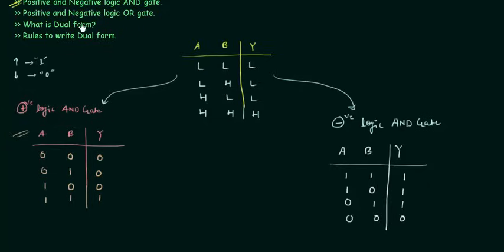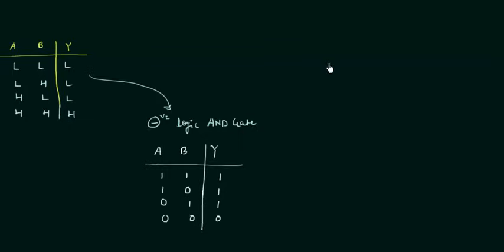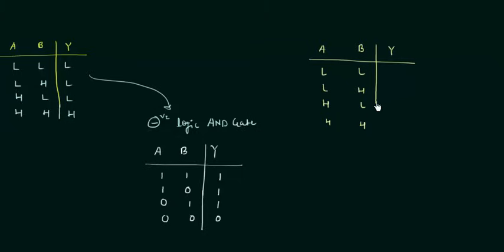Now we will move to positive and negative logic OR gate following the same steps. We take a two-input OR gate where A and B are the inputs. In an OR gate, the output is high if any input is high. So: low,low → low; low,high → high; high,low → high; high,high → high.